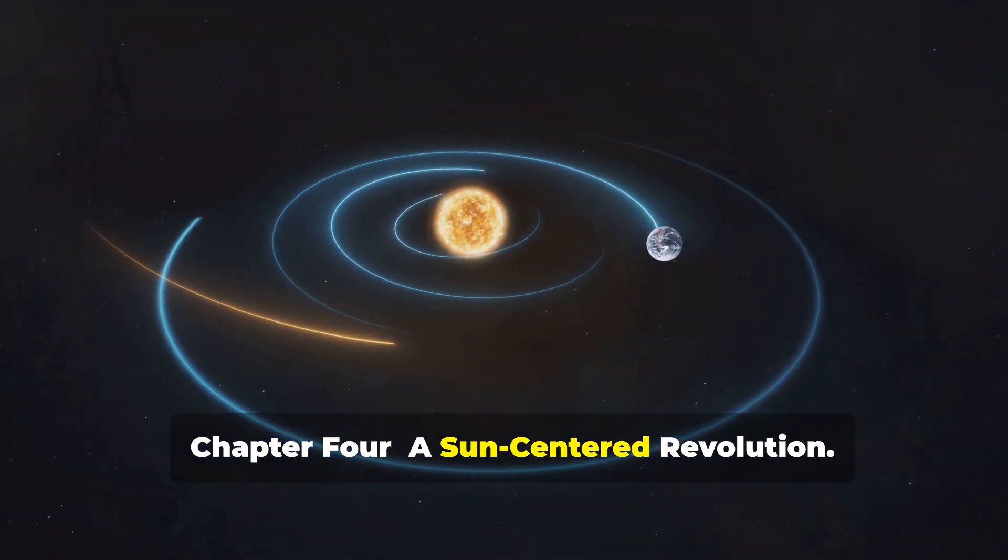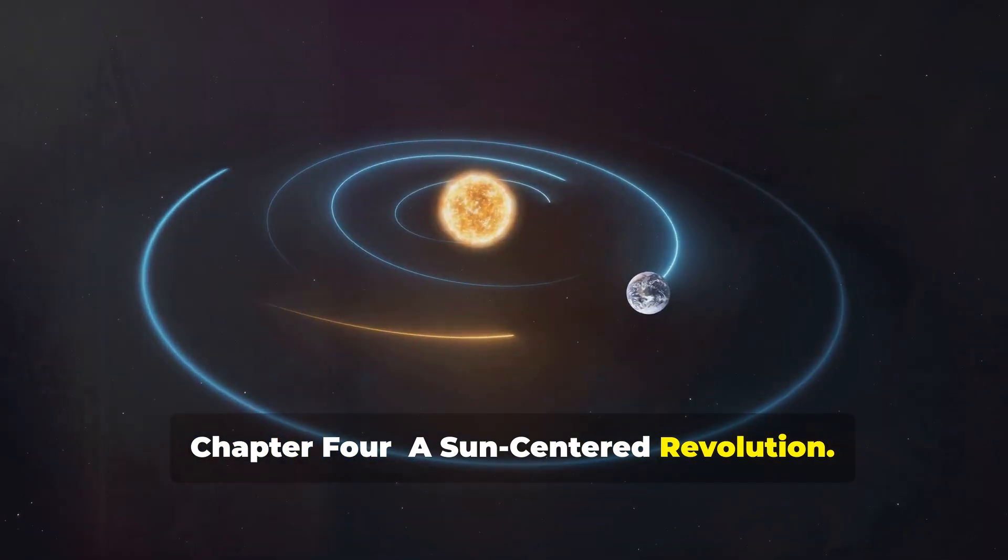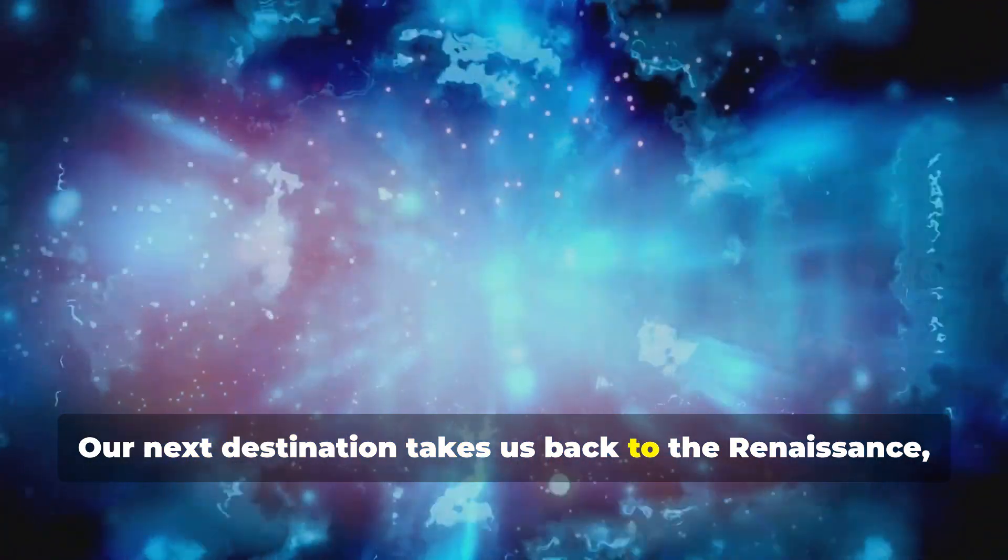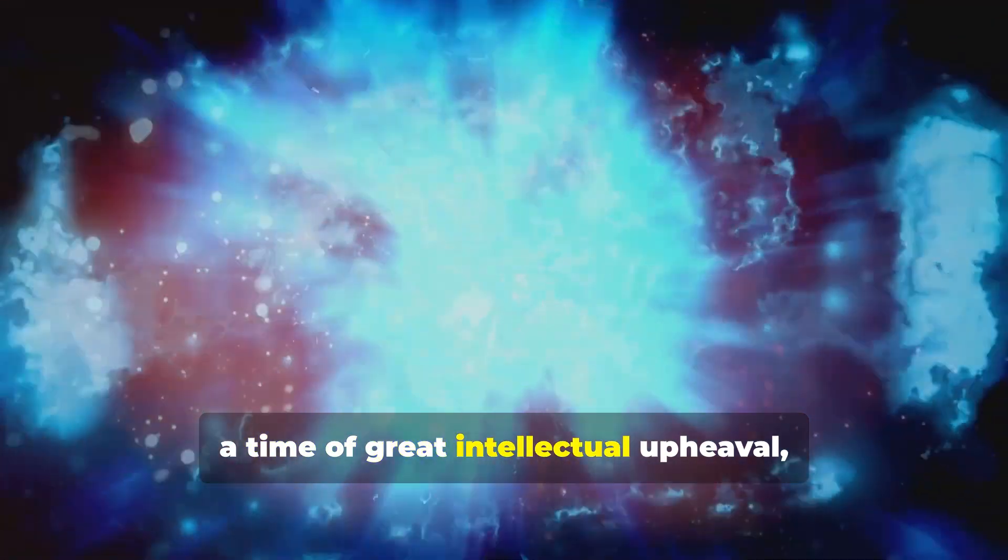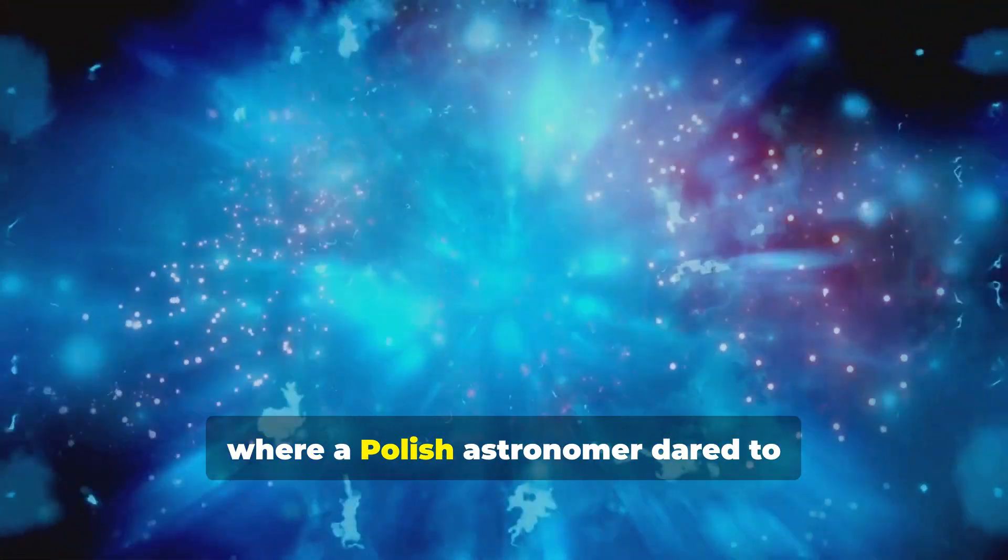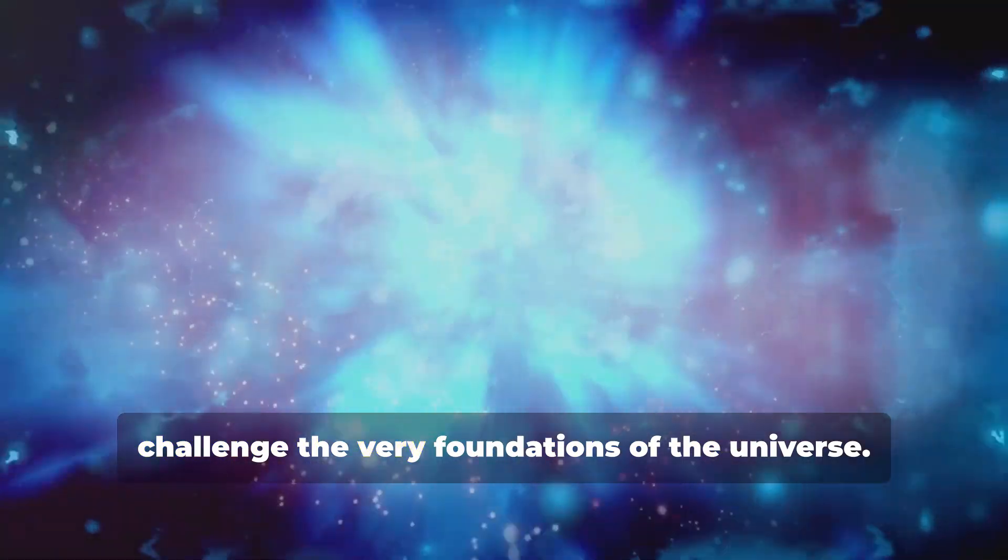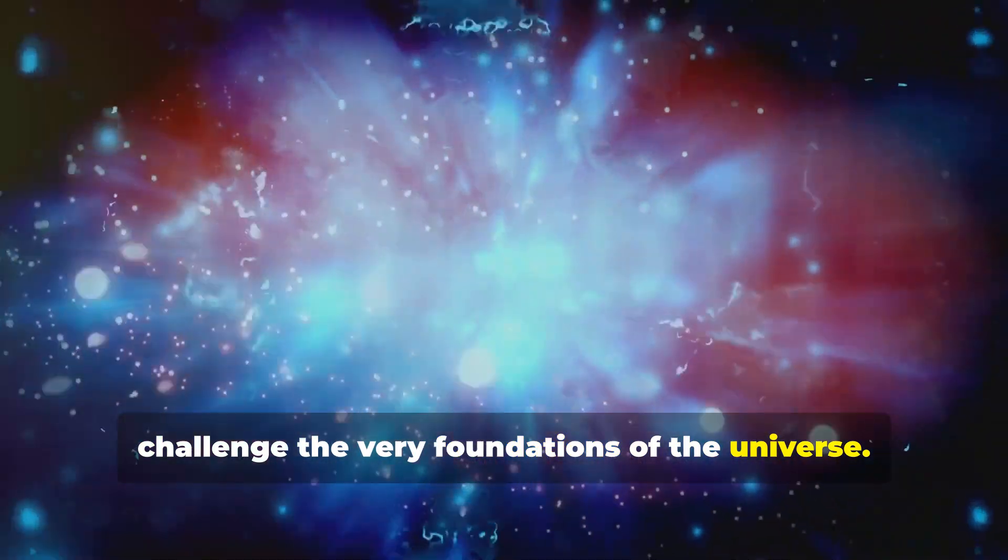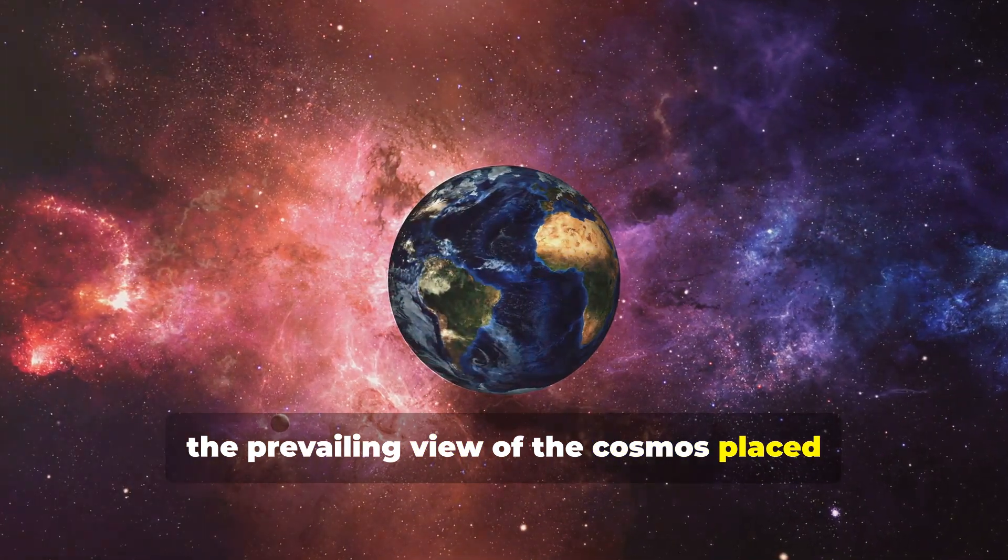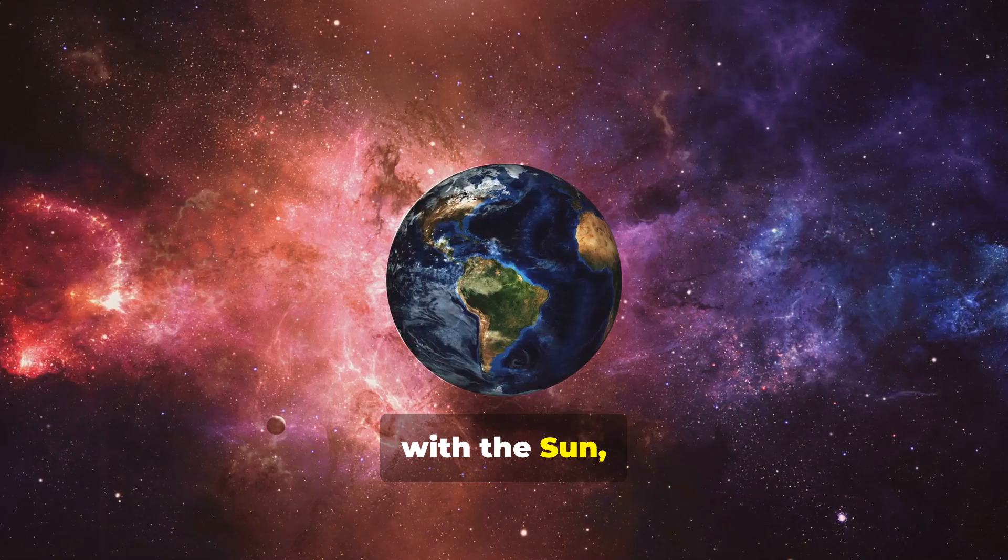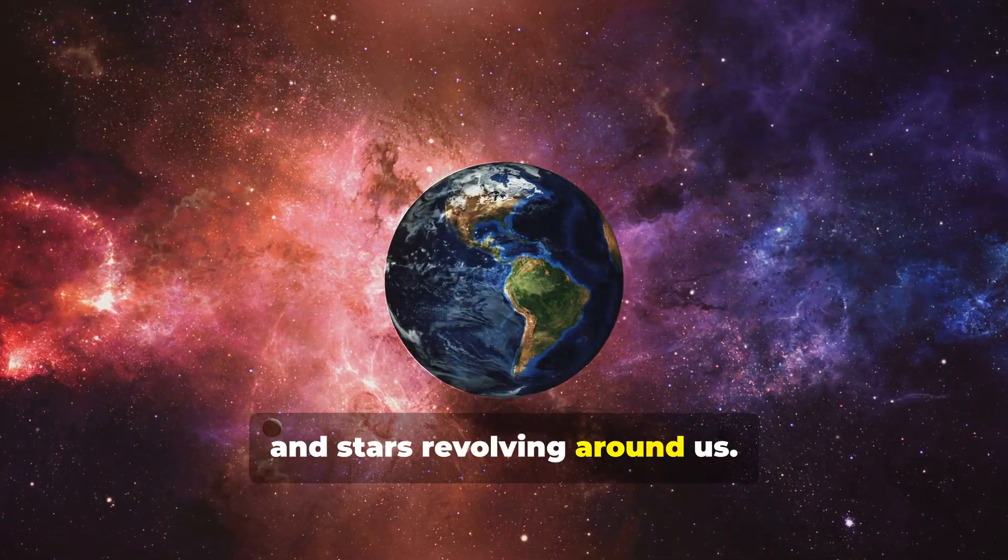Chapter four, a sun-centered revolution. Our next destination takes us back to the Renaissance, a time of great intellectual upheaval, where a Polish astronomer dared to challenge the very foundations of the universe. For centuries, the prevailing view of the cosmos placed Earth at the center, with the sun, moon and stars revolving around us.